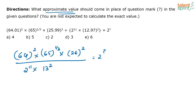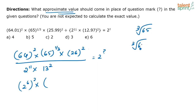The final answer I need is in terms of 2 to the power of what value. 64 can be written in terms of 2 to the power — what is 64? 64 is nothing but 2 to the power 6. So 64 squared is 2 to the power 6 squared. Then you have 65 to the power 1 by 3, or cube root of 65. What is cube root of 64? It is 4, because 4 cubed equals 64. So I can approximately say cube root of 65 is equal to 4.